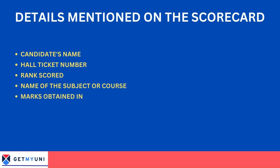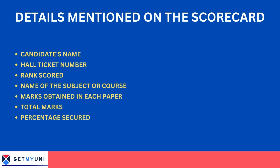The scorecard will include the candidate's name, hall ticket number, ranks code, name of the subject or course, marks obtained in each paper, total marks, and percentage secured.